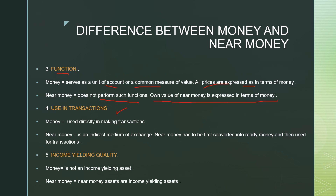The fourth difference is use in transactions. Money is easily and readily used in making transactions, whereas near money is not — it is an indirect medium of exchange; you must first convert it to money proper and then carry on your transactions. Fifth is income-yielding quality. Money does not yield income: if you keep 10 lakh rupees in a cupboard for 6 months, it remains 10 lakh. But near money such as a bond will give you interest over that period — so near money is an income-yielding asset, while hard cash is not.